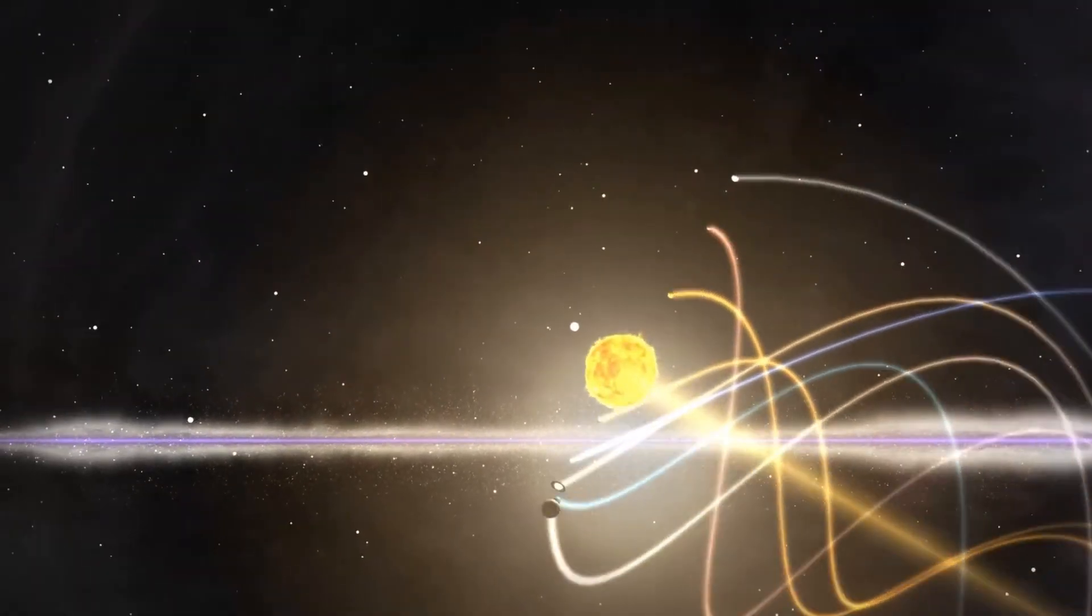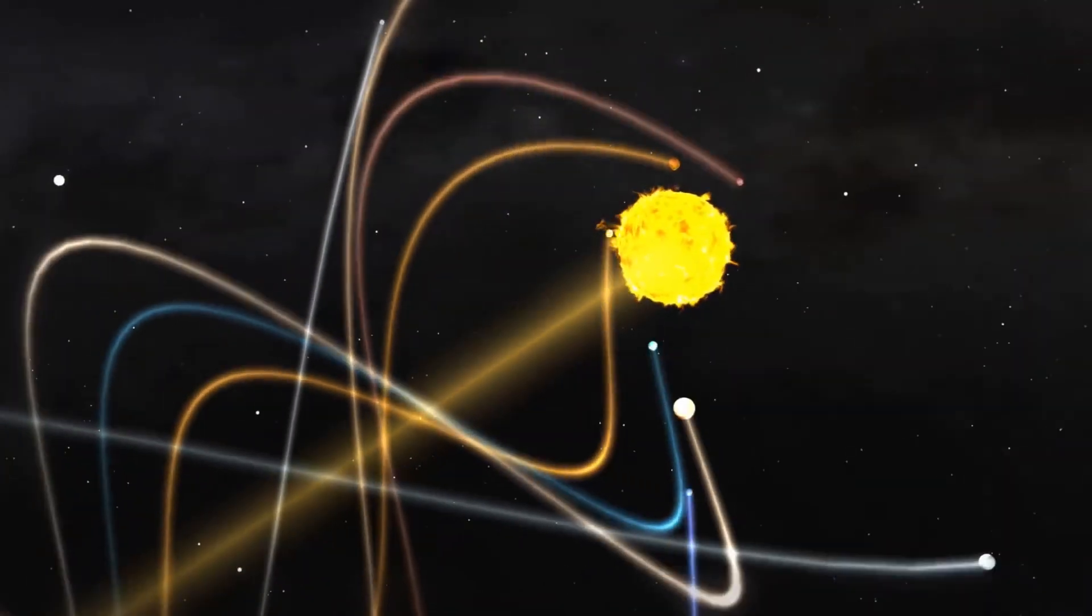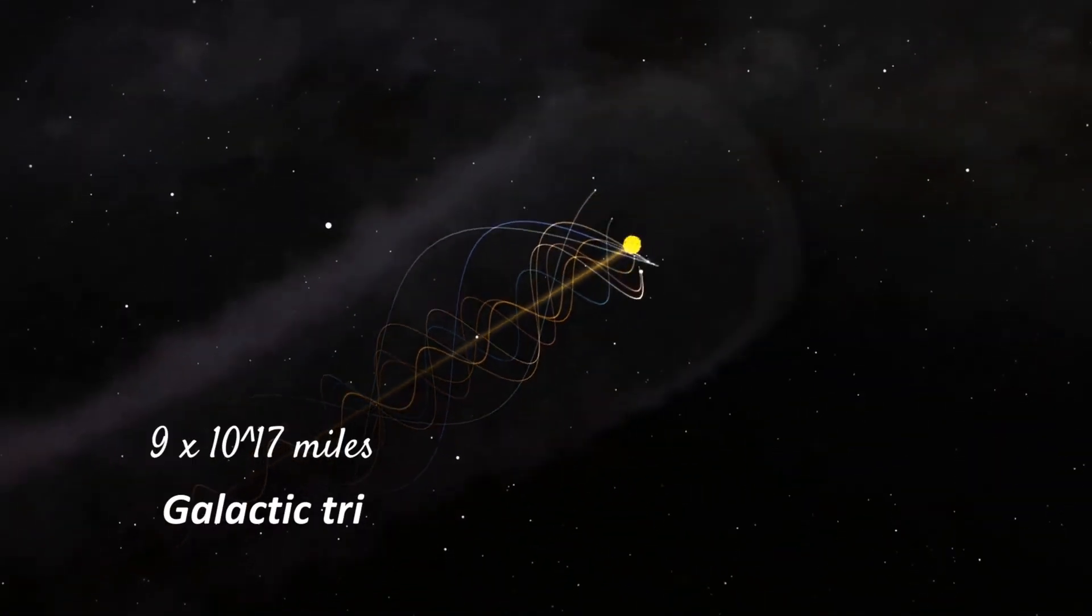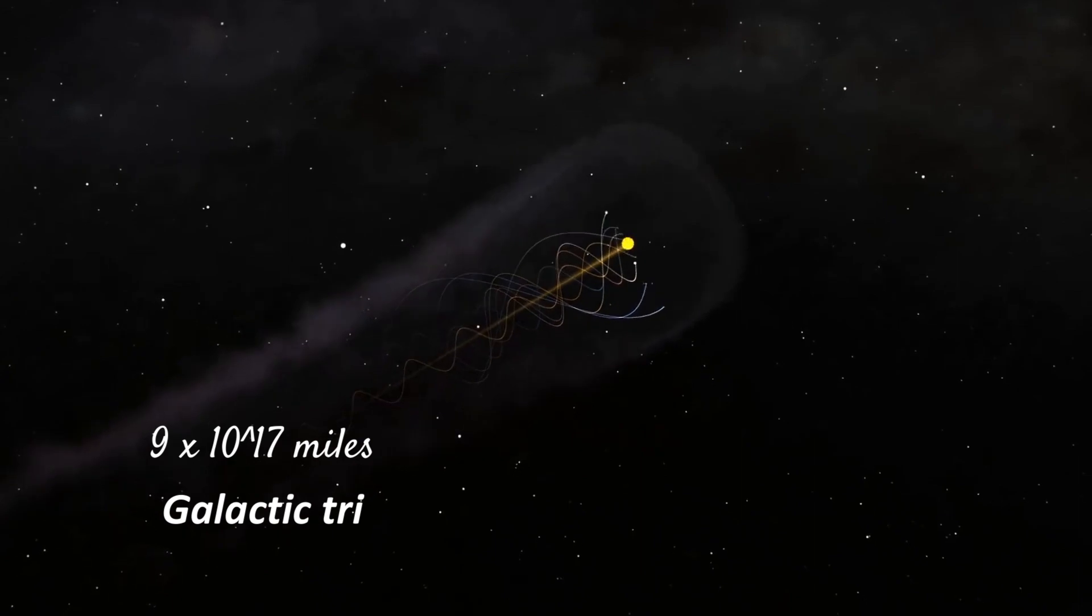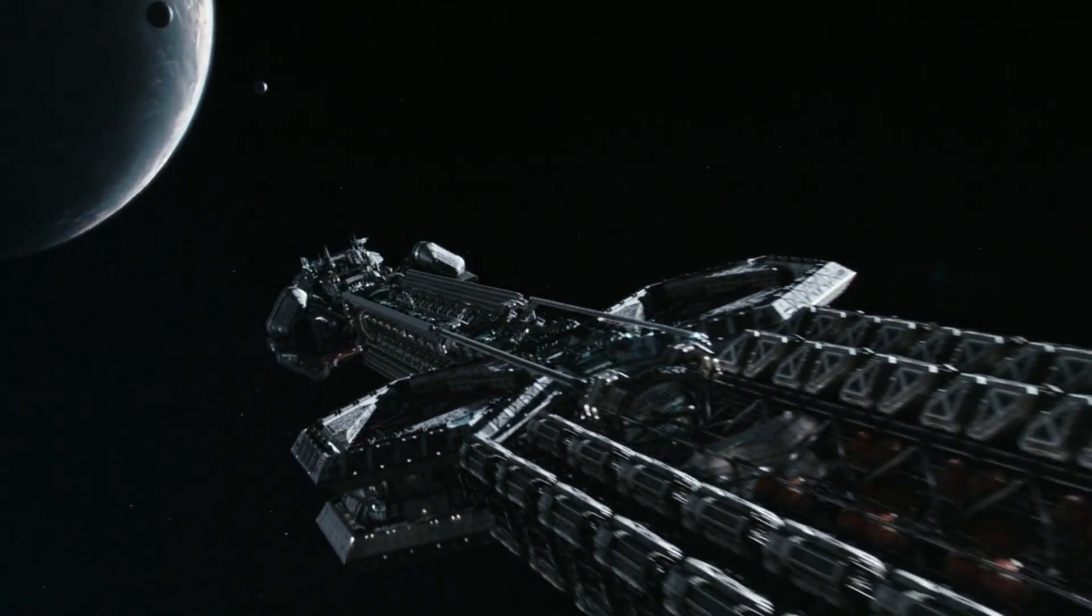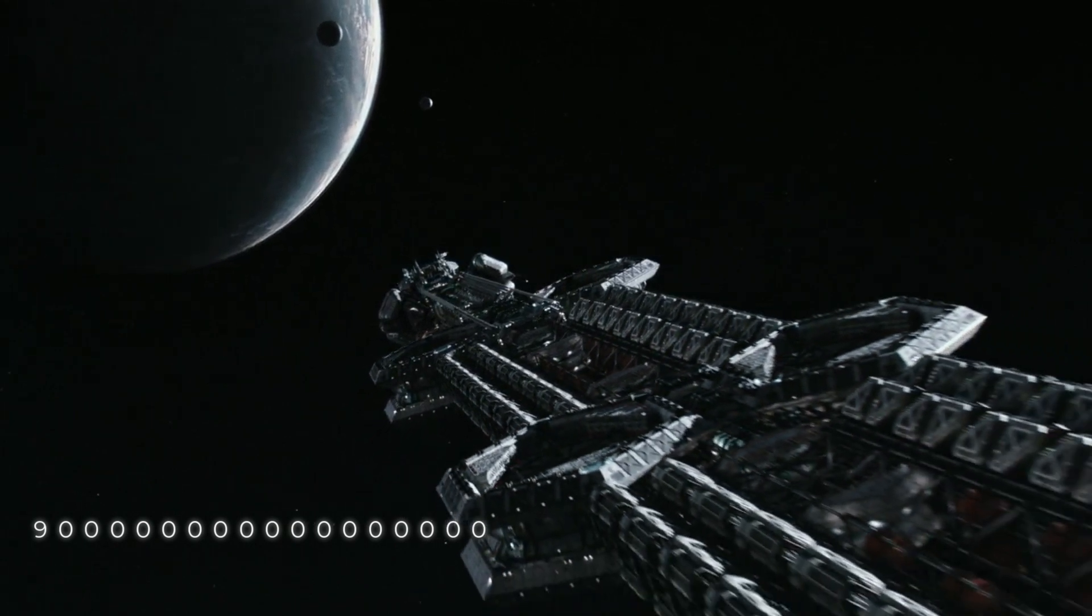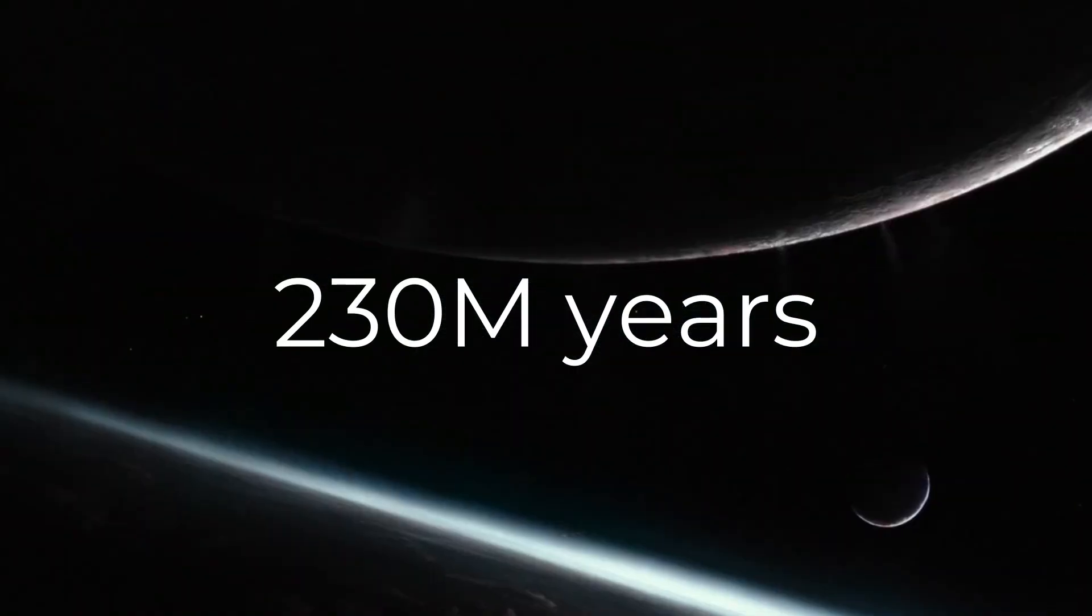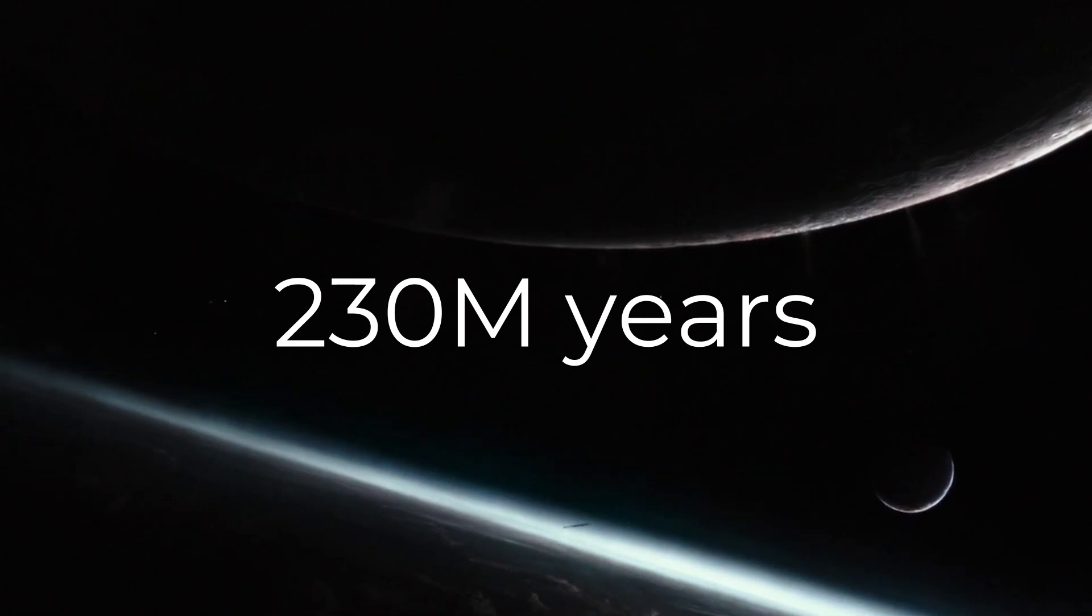Did you know that the distance our solar system has to travel for an entire galactic trip is a whopping 9 times 10 to the power of 17 miles? That's a 9 with 17 zeros. That's a 230 million year road trip. Let's put that into perspective.